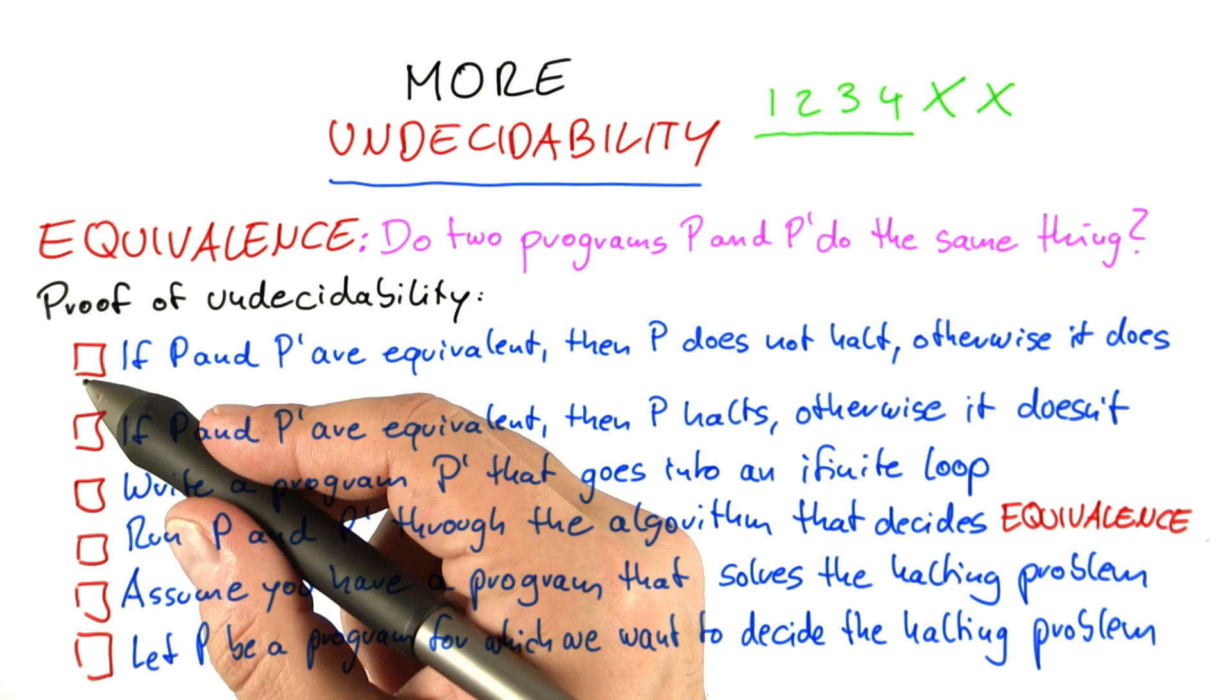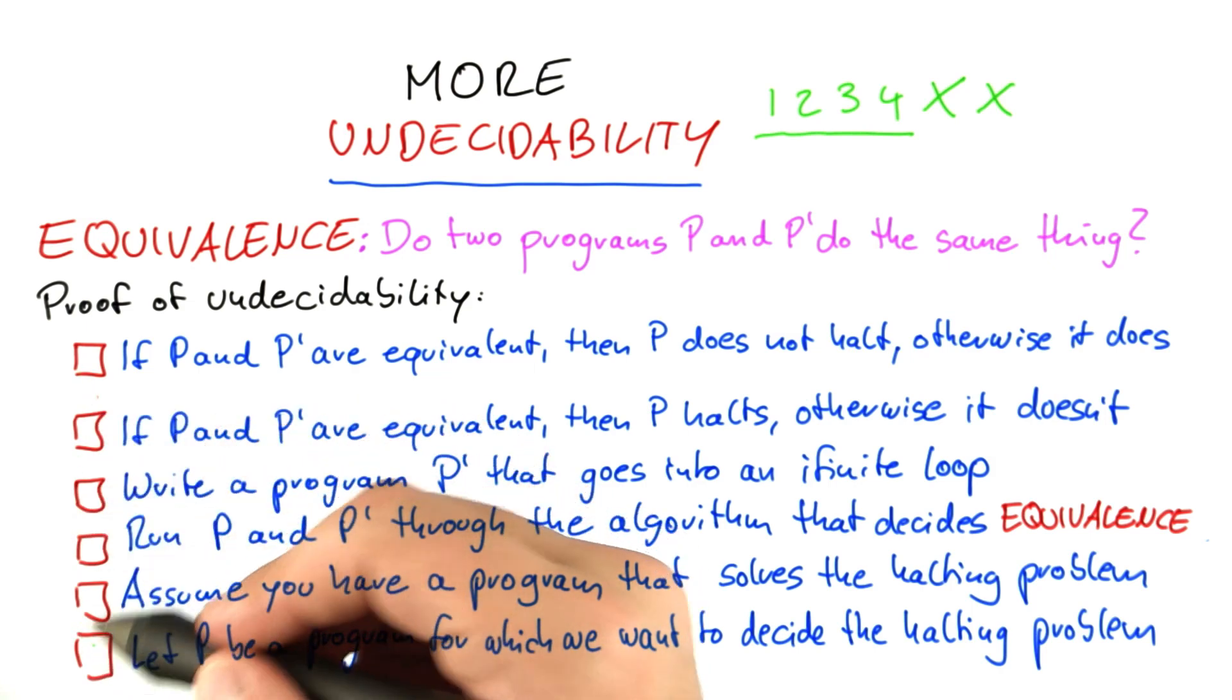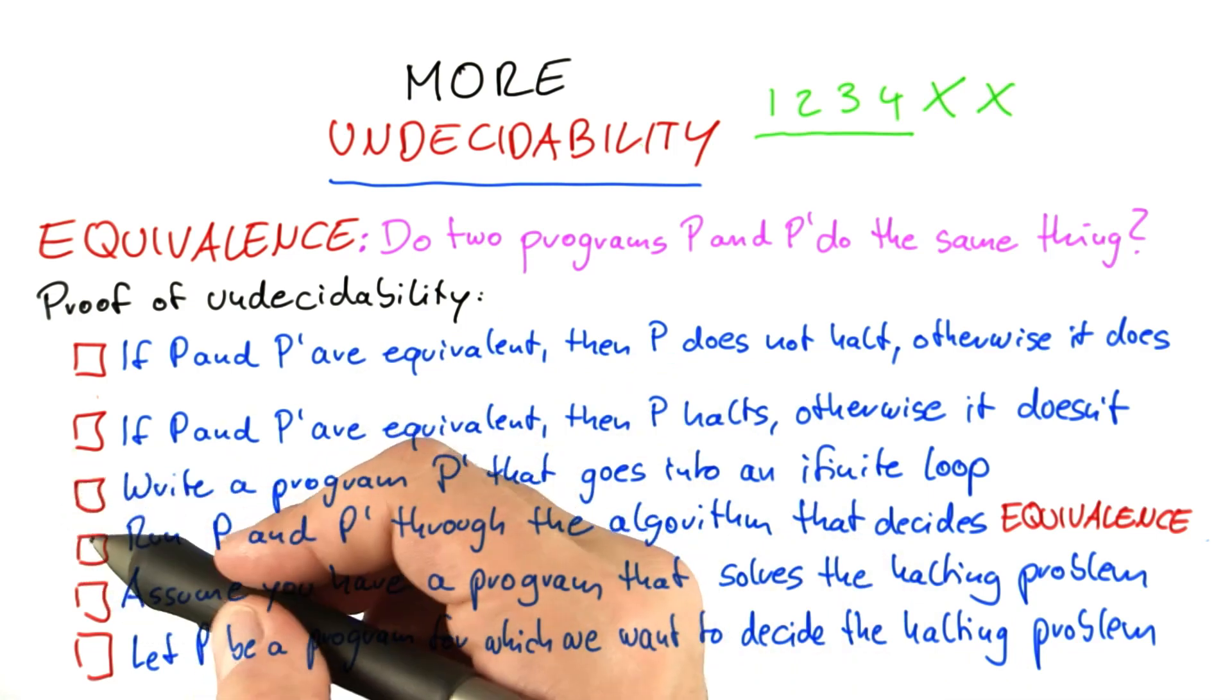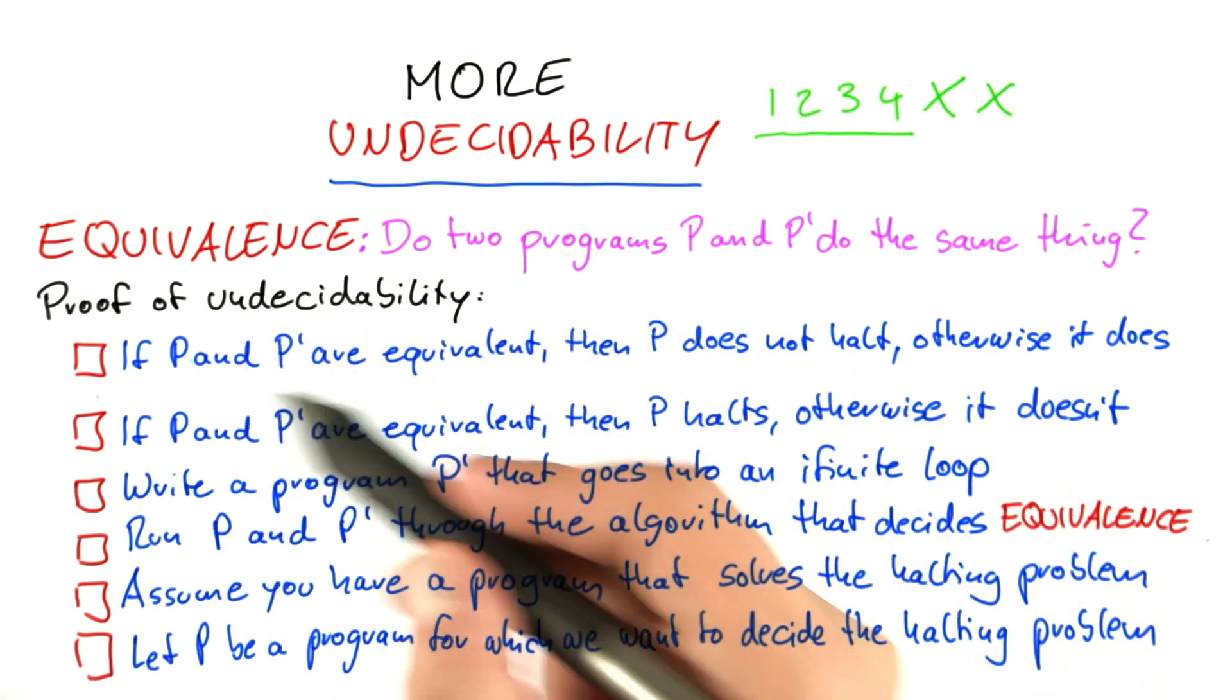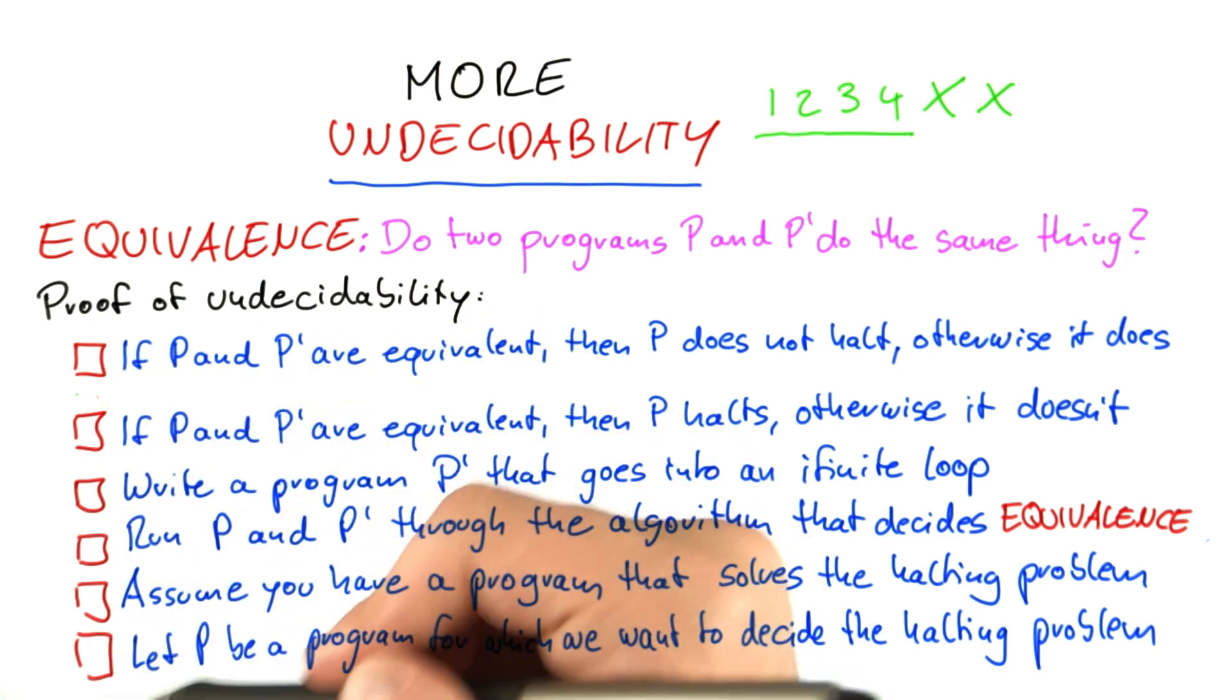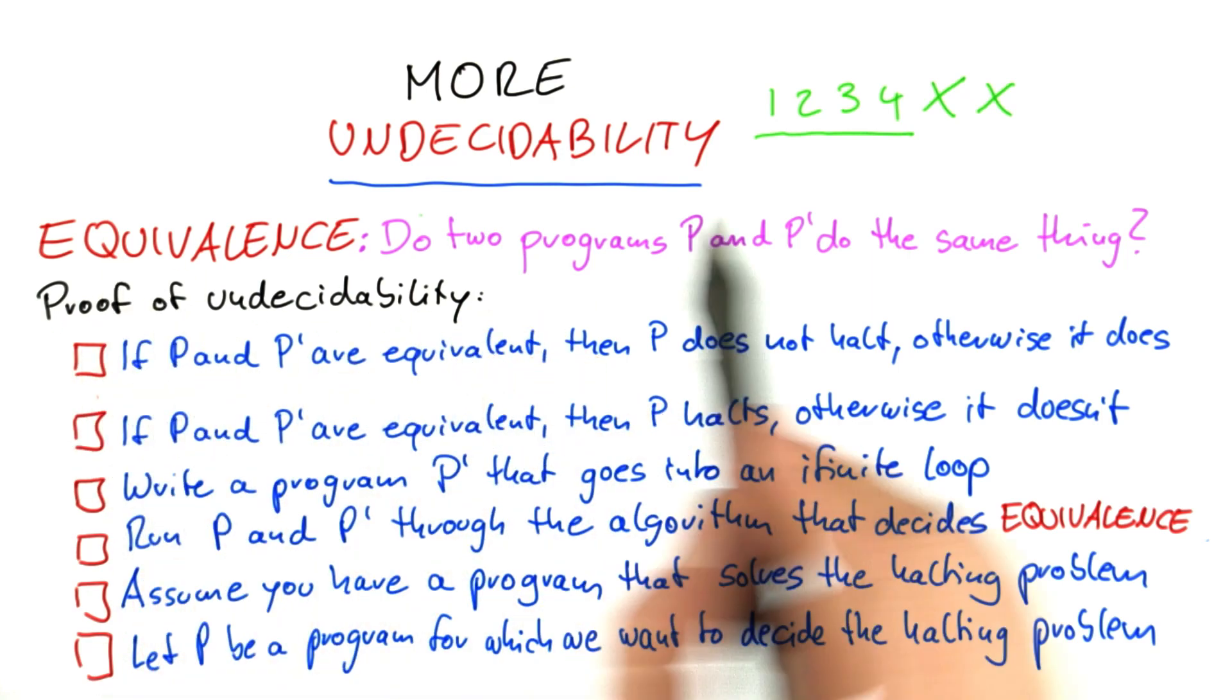So you write a one next to the building block that would come first in a proof of the undecidability of equivalence. Then you write a two next to the next building block, and so on. It might be easier to first think of how you would prove this and then fill out the boxes rather than playing around with them. How do you prove that equivalence is undecidable?